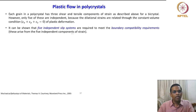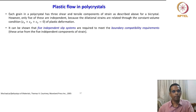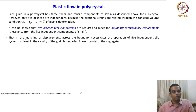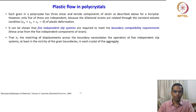These arise from the five independent components of strain. Now we are introducing another fundamental requirement for plastic flow: five independent slip systems are required to meet boundary compatibility requirements. Matching of displacement across the boundary necessitates the operation of five independent slip systems, at least in the vicinity of the grain boundaries, in each crystal of the aggregate.